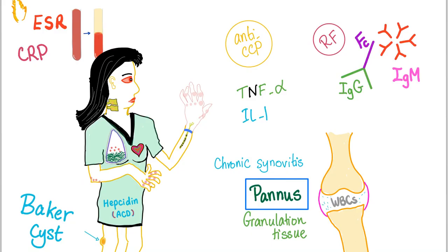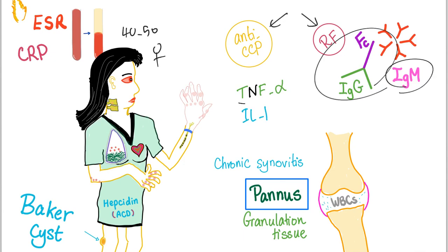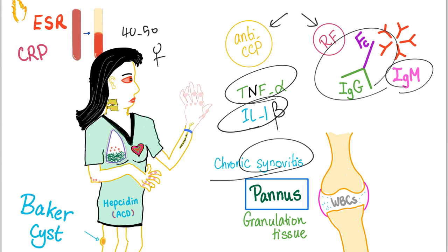Quick one-minute review of rheumatoid arthritis: inflammatory arthritis, high ESR, high CRP, Baker cyst, anemia of chronic disease (anemia of inflammation), rheumatoid nodules on extensor surfaces, PIP and MCP involvement, carpal tunnel syndrome (median nerve entrapment), pericarditis, basal pulmonary fibrosis, episcleritis, scleritis, atlanto-axial subluxation. Typical patient: 40–50 year old female. Autoantibodies: anti-CCP and rheumatoid factor (IgM against FC portion of IgG). Key cytokines: TNF-alpha and interleukin-1 beta. Pannus formation → ankylosis → osteopenia.